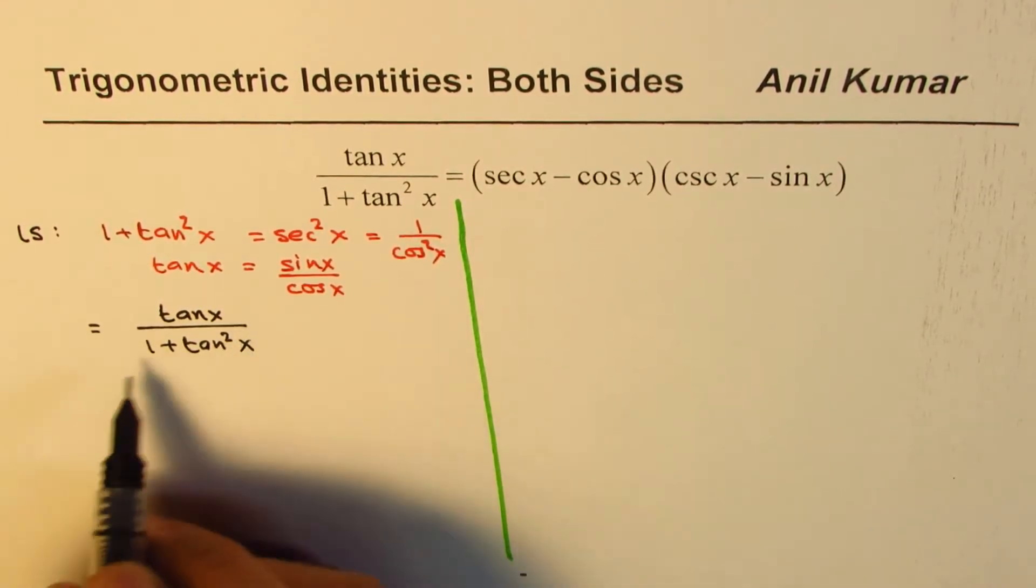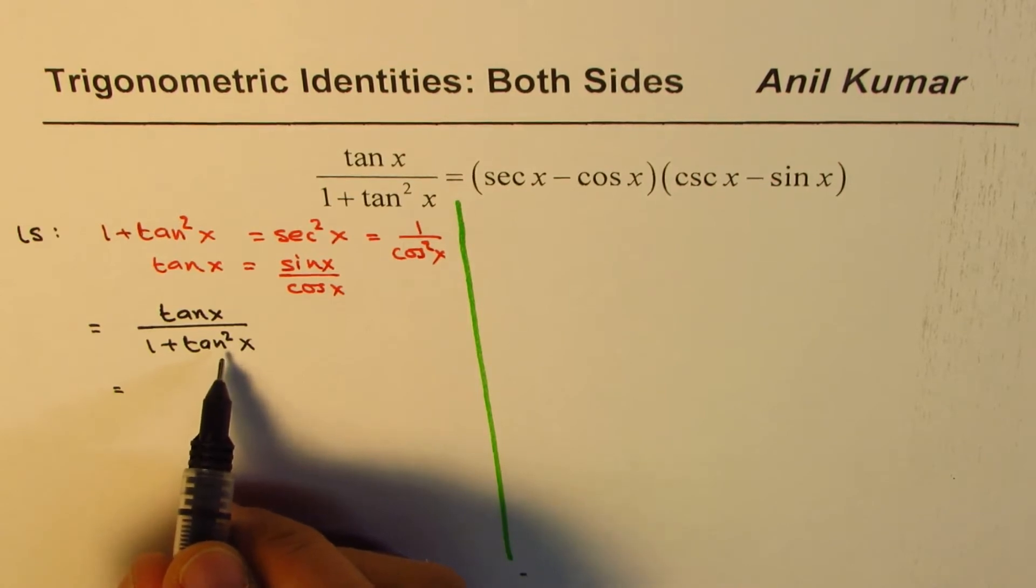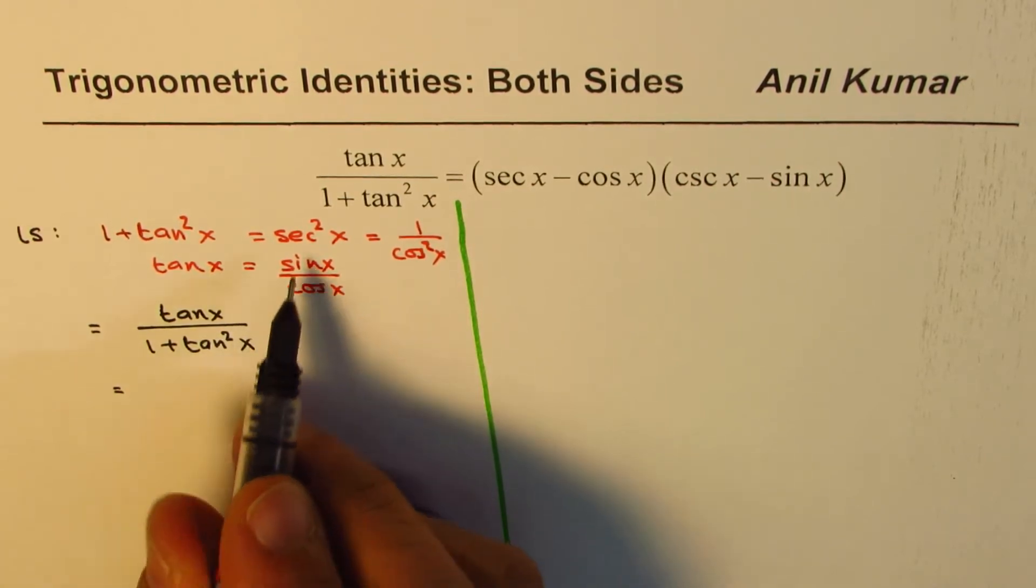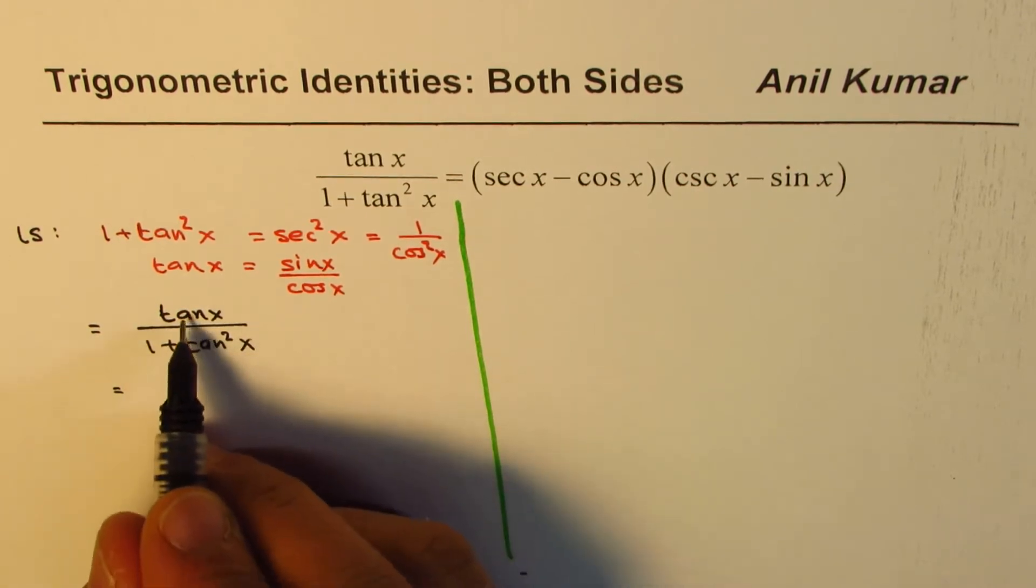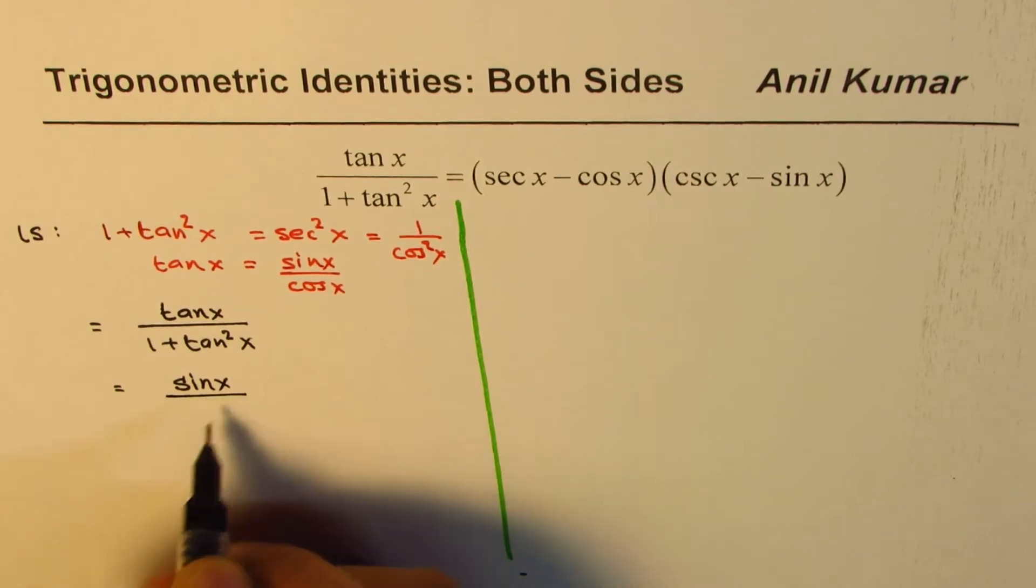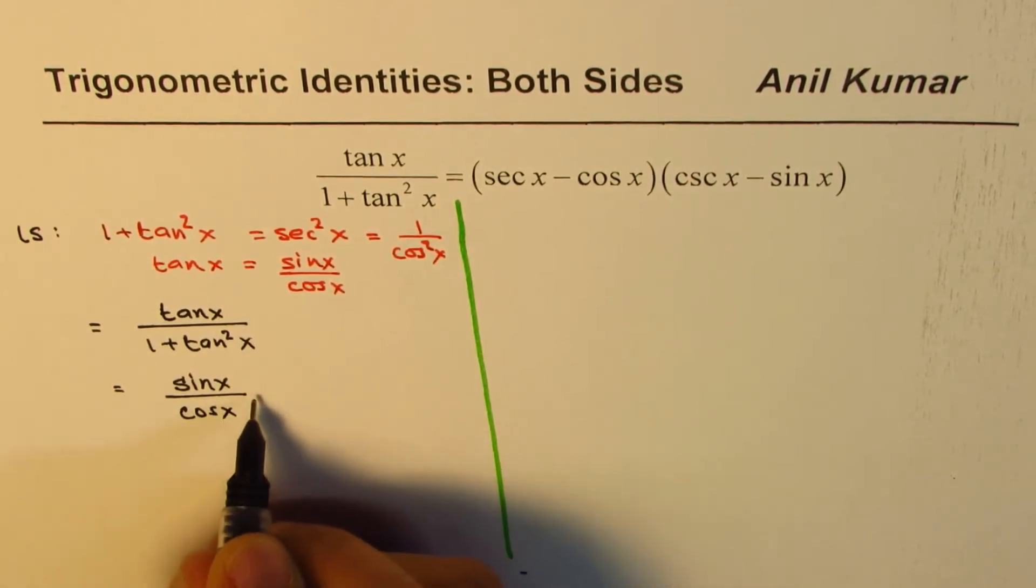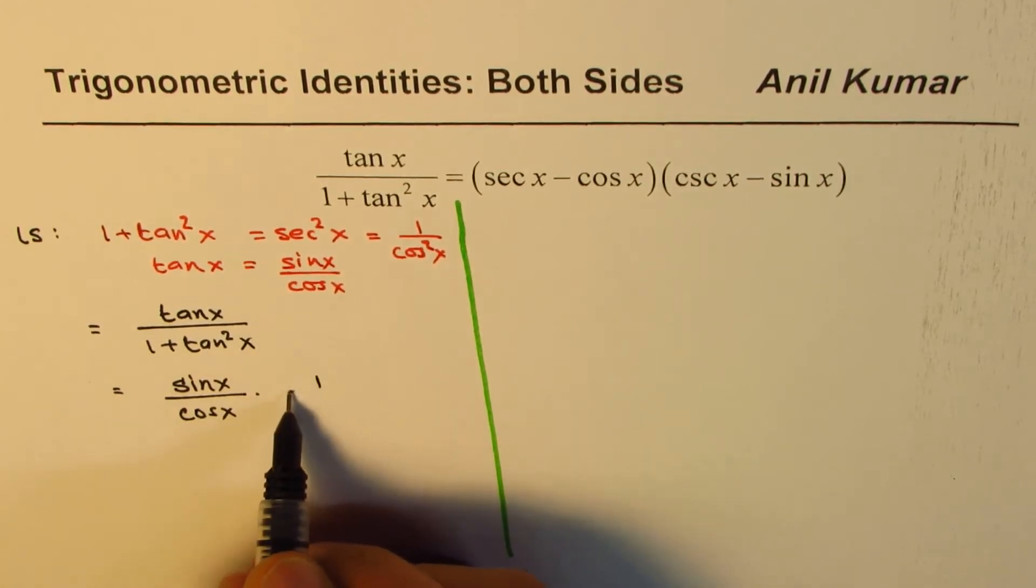Now as I'm saying, 1 plus tan square x is secant square x, and tan x is sin x over cos x, and 1 plus tan square x is secant square x. So let me write this as 1 over secant square x.